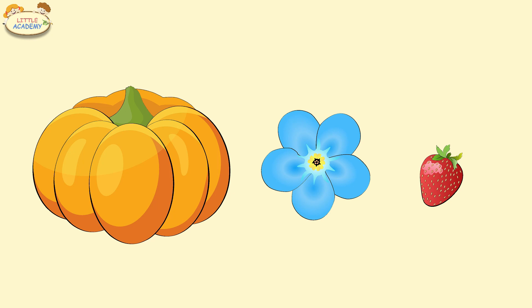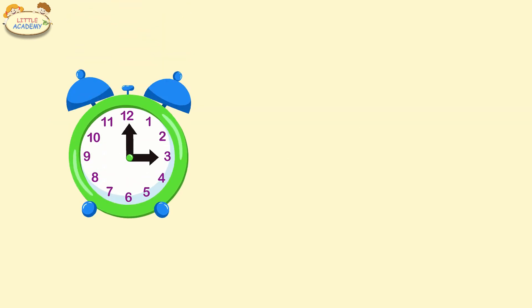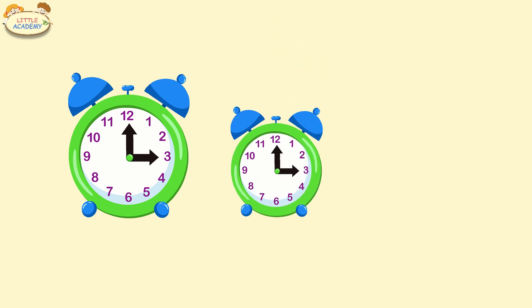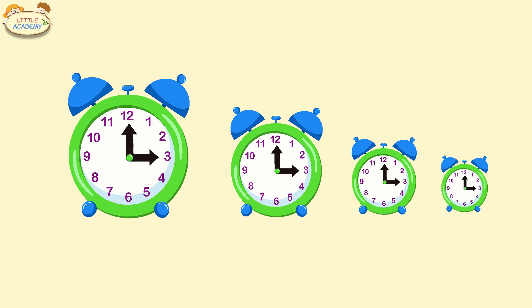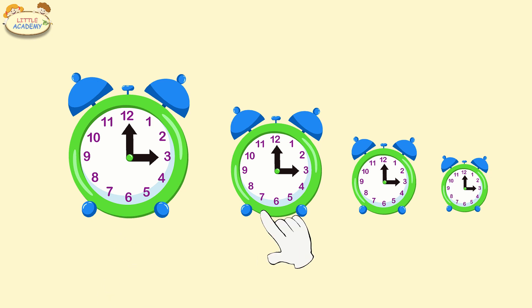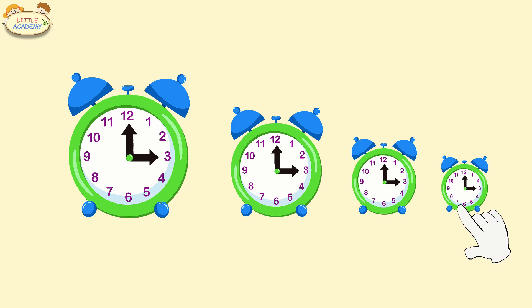Great job. Now you know how objects can be different sizes. Now let's see how we can compare the objects. This alarm clock is large. This one is smaller. This one is even smaller. And this one is the smallest. Large, smaller, even smaller, and the smallest.